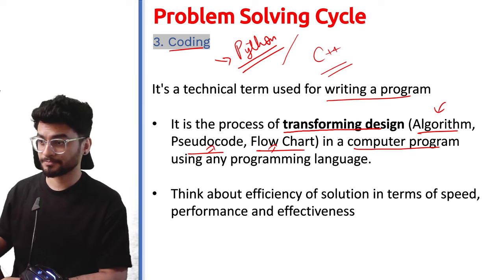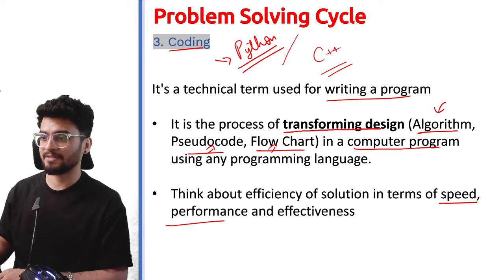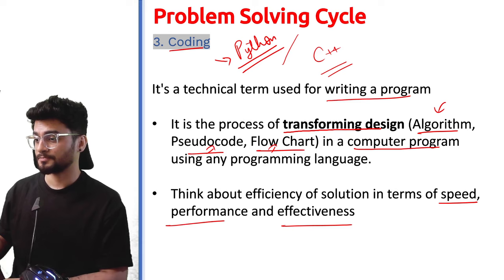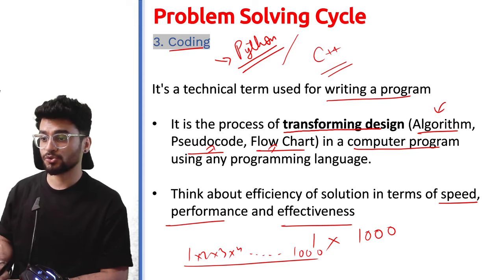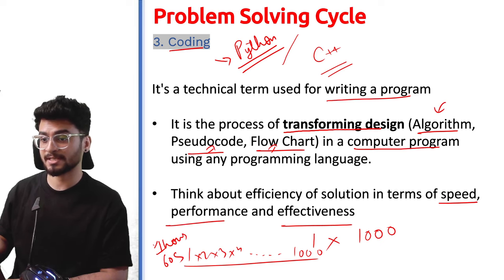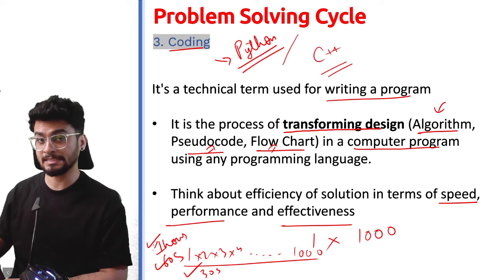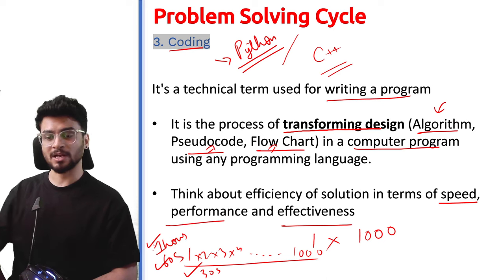When coding, there are multiple ways to solve any problem, so you have to think about speed, performance, and effectiveness. For example, if you want to calculate 1×2×3×4 and so on up to 1000, there can be many ways to solve this — some processes take an hour, some take 60 seconds, some only 30 seconds. There are multiple approaches, so you have to choose what suits your code. This is the third step: coding.